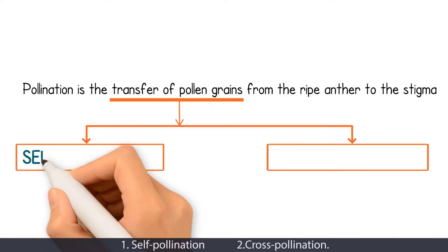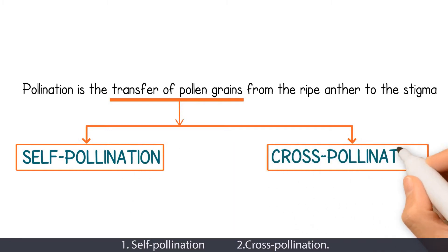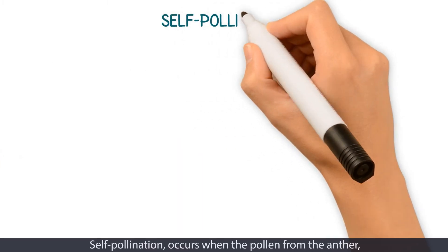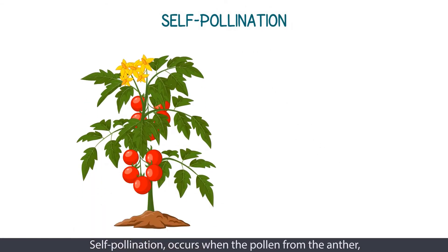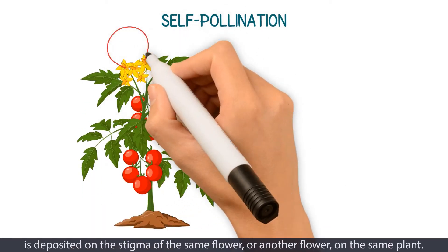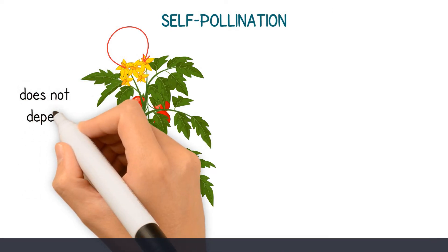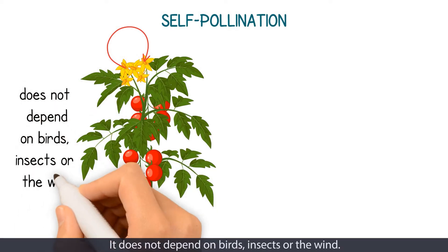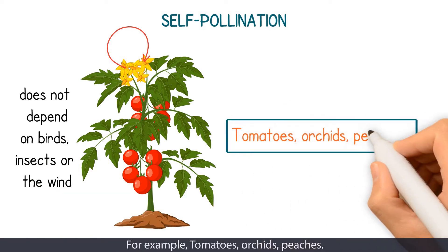One, self-pollination. Two, cross-pollination. Self-pollination occurs when the pollen from the anther is deposited on the stigma of the same flower or another flower on the same plant. It does not depend on birds, insects, or the wind. For example, tomatoes, orchids, peaches.